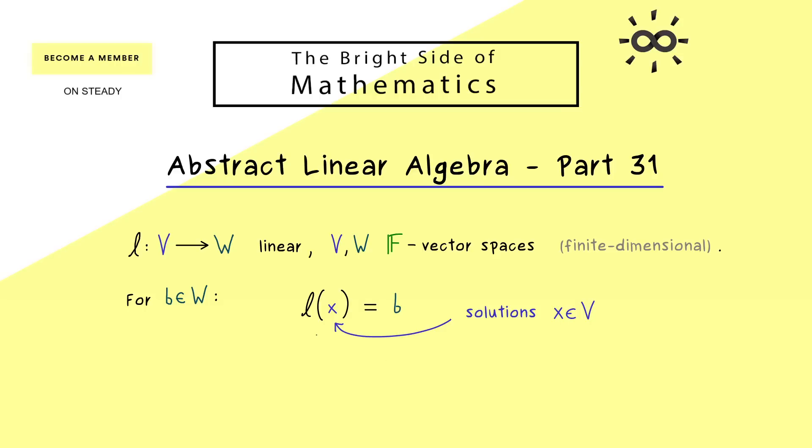We see that immediately because we can just choose bases and a matrix representation of the linear map l. And then what we have is a matrix times a column vector equals a column vector. Hence, this is just an ordinary system of linear equations which you are able to solve.